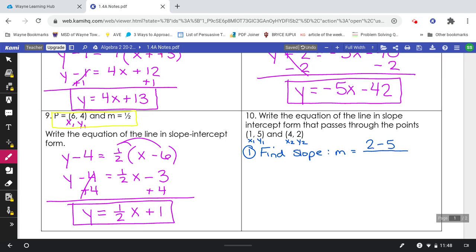2 minus 5 over 4 minus 1. 2 minus 5 is negative 3. 4 minus 1, positive 3. And when I divide that all the way out, I get negative 1 for my slope.